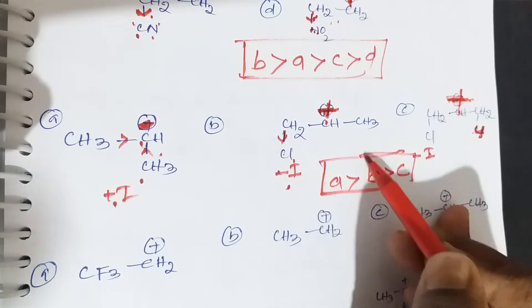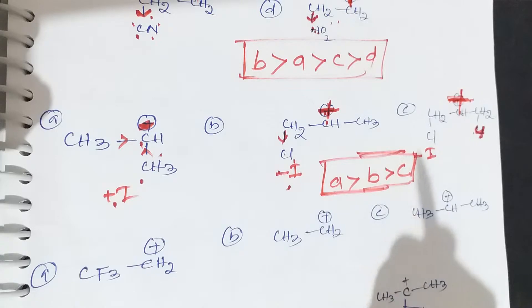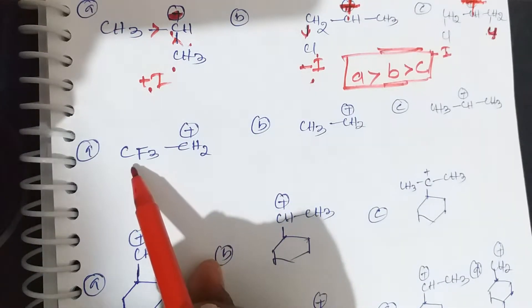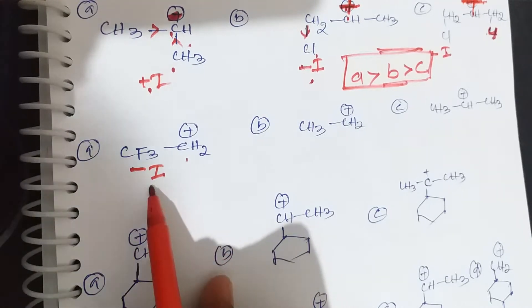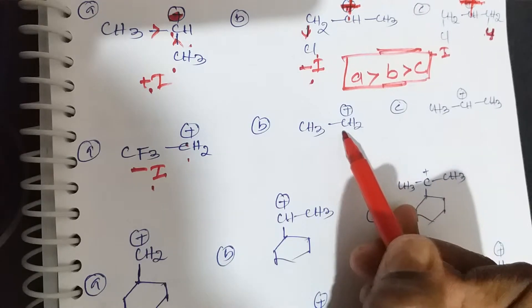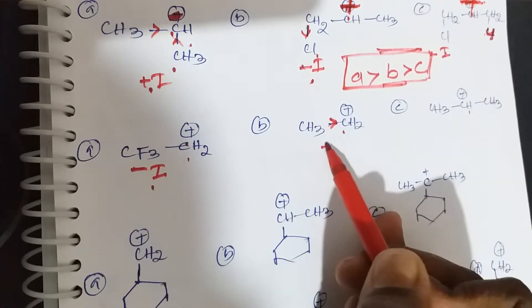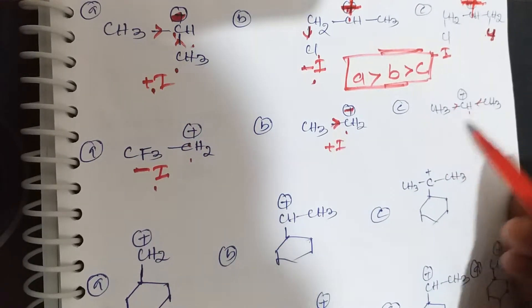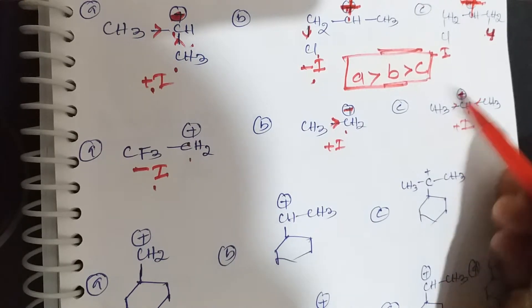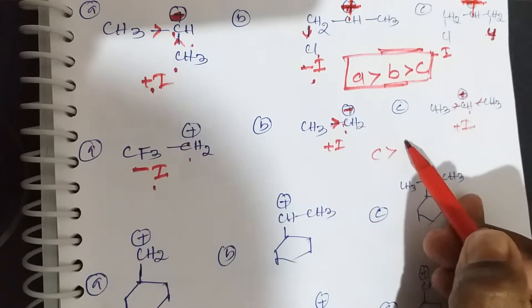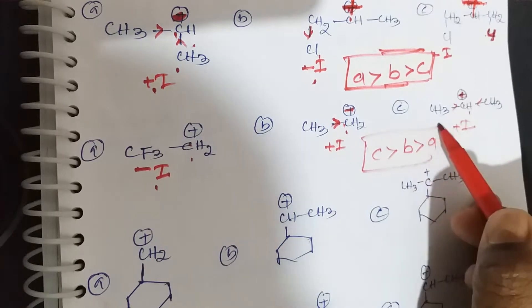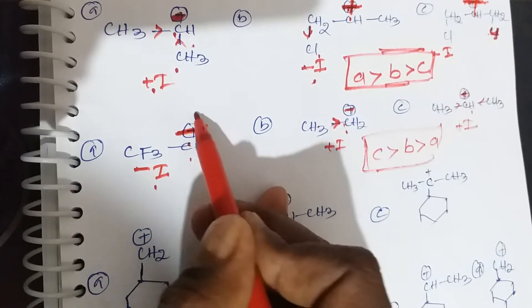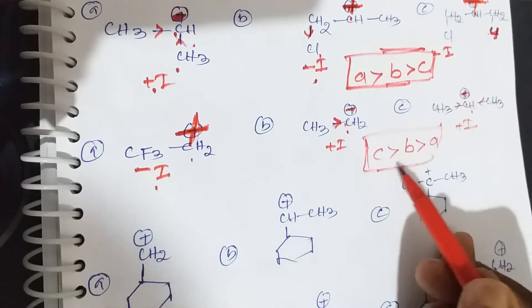The statement of carbocation stability: positive charge should be less on carbon — that is the more stable. Next example: CF3-CH2+ — here fluorine has minus I effect. The first and second are primary carbocations; the third has two CH3 (plus I) groups making it secondary. CF3 is minus I, so positive charge increases in A. With two methyl groups, positive charge completely decreases in C. Stability order: C > B > A.